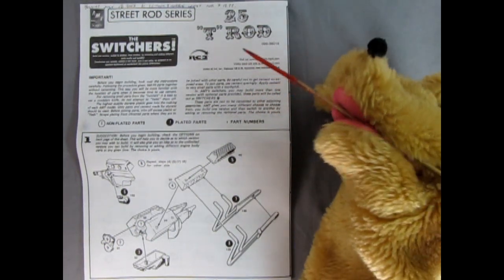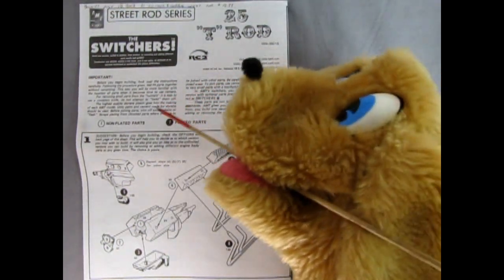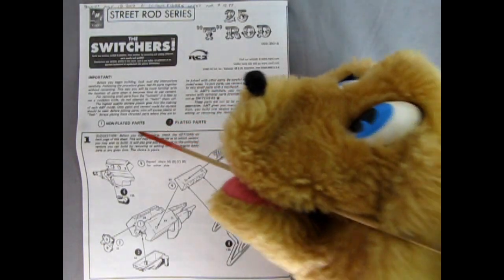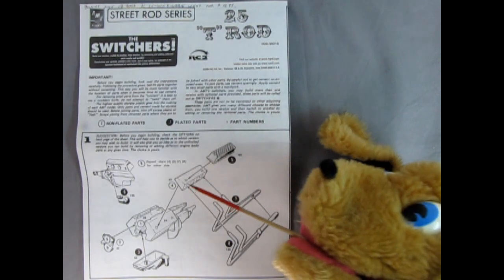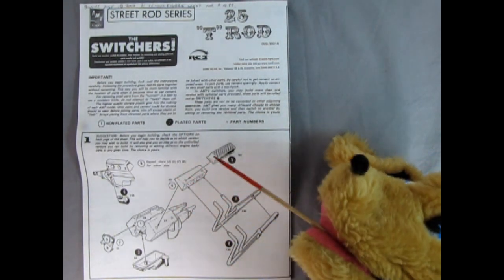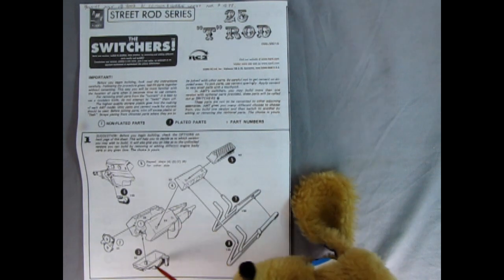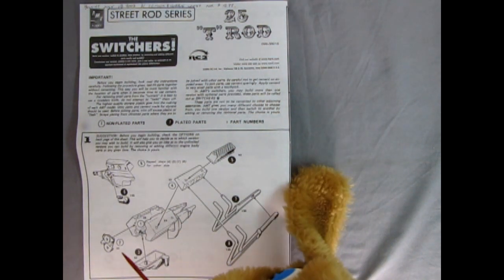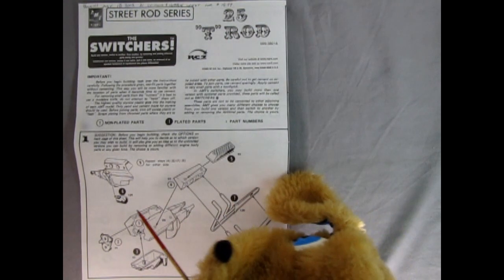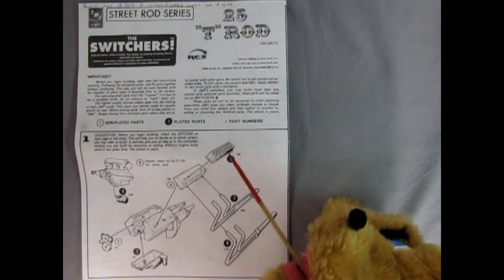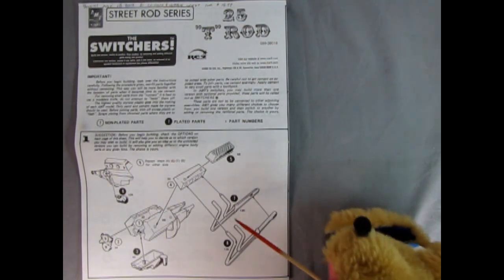All right, and we are back here looking at the instruction sheet. So here it's got the important, read this before you begin. And it shows us the non-plated parts, the plated parts, and the part numbers. And then right down here we see our engine going together. So here we've got our left and right-hand side engine block with the transmission. Oil pan comes up from the bottom. Our front timing chain cover goes on there. Then we have our right-hand and left-hand cylinder heads, as well as our valve covers. And these really cool two-piece exhaust manifolds.